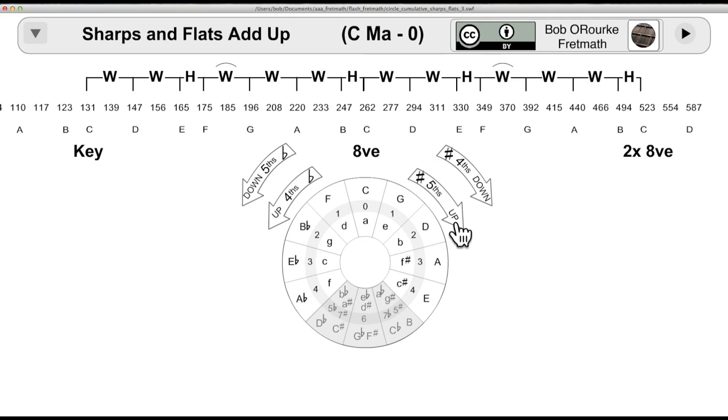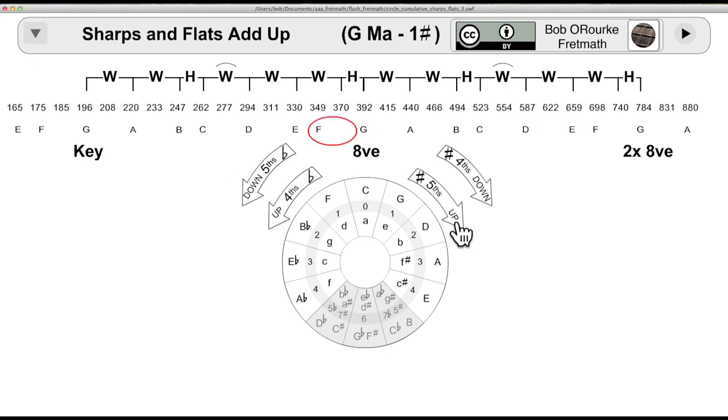Starting with the key of C, which has zero sharps and flats. C equals 131. We're going to count up five letter names to G. That's C, D, E, F, G. G equals 196.